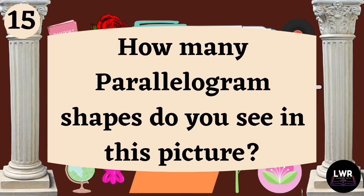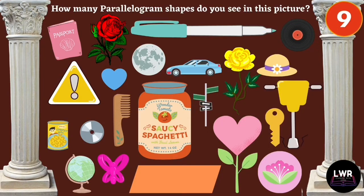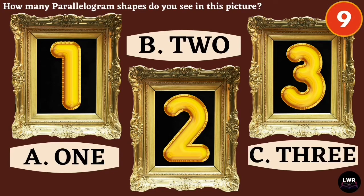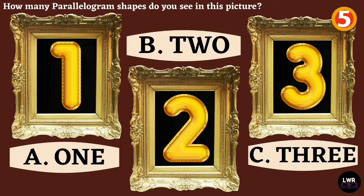Question number fifteen. How many parallelogram shapes do you see in this picture? Letter A, one. Letter B, two. Or letter C, three.